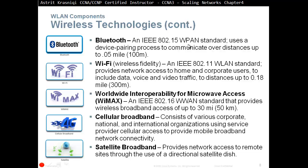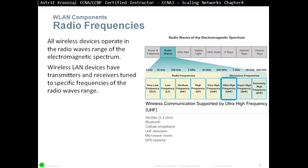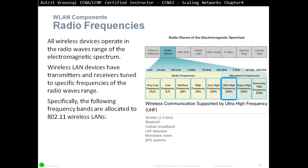Bluetooth WPAN is standard 802.15, WiMAX is standard 802.16, and we're going to talk a lot more about Wi-Fi standard 802.11. All wireless devices operate in the radio waves range of the electromagnetic spectrum. The following frequency bands are allocated to 802.11 wireless LAN: 2.4 GHz ultra high frequency, 5 GHz super high frequency, and 60 GHz extremely high frequency.